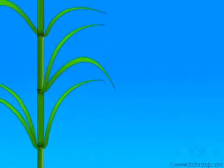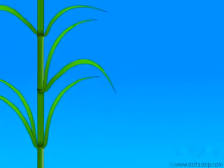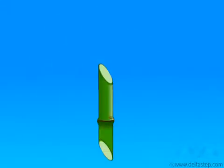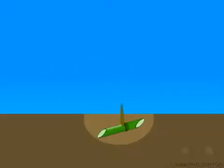Now let us see vegetative propagation in sugar cane through stem cutting. This is the node and this is the bud. We cut that portion of the stem that has at least one bud and sow it in the soil. See — a new plant is developing from the bud.